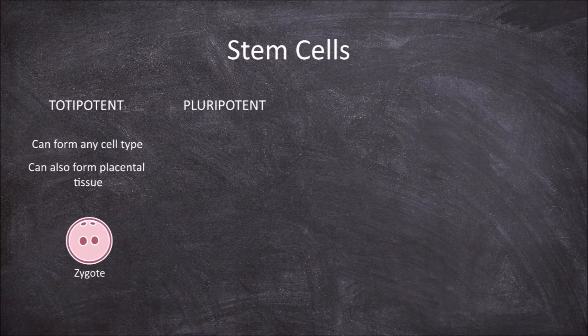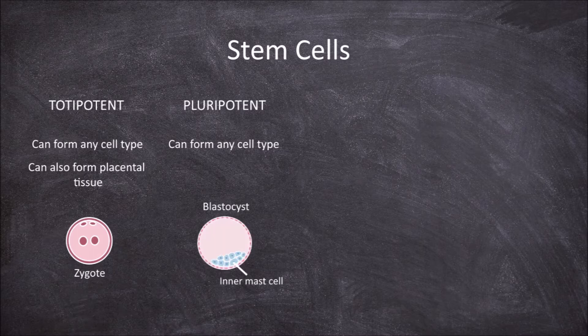Pluripotent stem cells can also form into any cell type, but not into placental tissue. In the early stage of embryo development a blastocyst is formed, which has inner mass cells that are pluripotent, meaning they can form into any cell type.